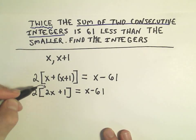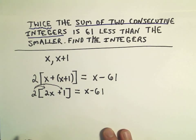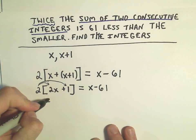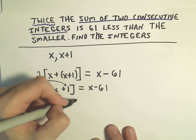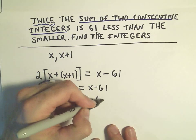Now I'm going to distribute the 2 to both terms inside the brackets. 2 times 2x is 4x. 2 times positive 1 is positive 2 equals x minus 61.